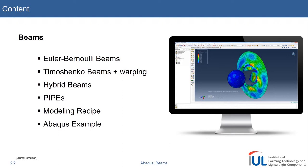To be more precise we'll talk about Euler-Bernoulli beams and Timoshenko beams as presented in the lecture, whereas Timoshenko beams can include warping, Euler-Bernoulli beams cannot. In Abaqus we have more advanced classes of beams, so-called hybrid beams which can be Euler-Bernoulli or Timoshenko type beams and so-called pipes. Finally we'll wrap up with a modeling recipe to give you a general guideline on how to create a model using beams, and then we'll do an Abaqus example live.